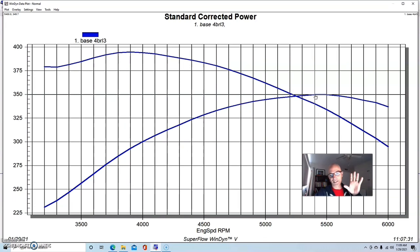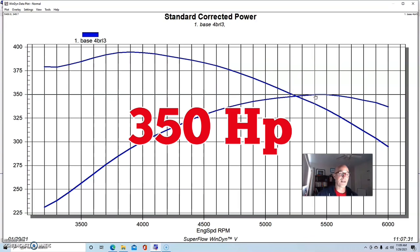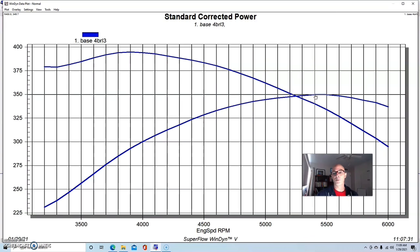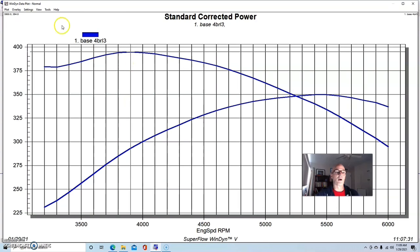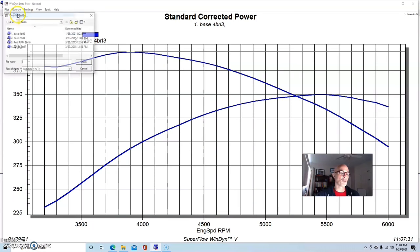So run with the stock Fueley heads and a Torker II and a 750, this 355 produced 350 horsepower, 349.7, and 395 foot pounds of torque. This is with the four barrel.